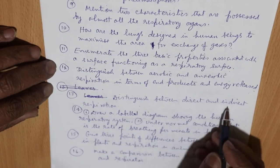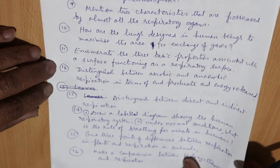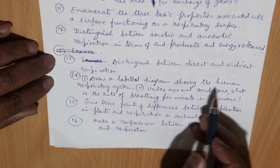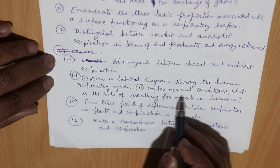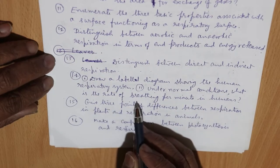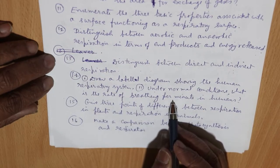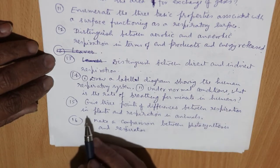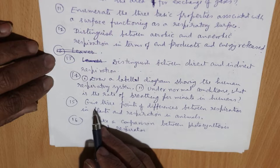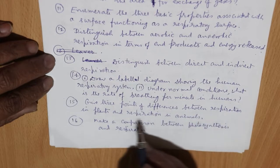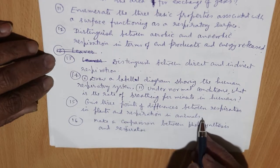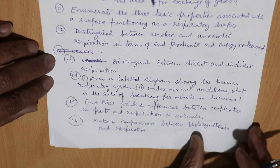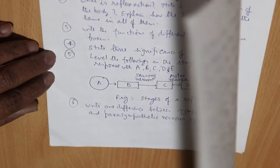Distinguish between direct and indirect respiration. Draw a labelled diagram showing the human respiratory system under normal conditions. What is the rate of breathing per minute in humans? Give three points of difference between respiration in plants and in animals. Make a comparison between photosynthesis and respiration.